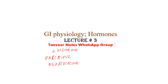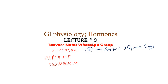Endocrine hormones have four key features. First, they are released from an endocrine cell. From the endocrine cell, these secretions move via portal circulation to the systemic circulation, and from the systemic circulation to the target cells. So there is a long distance they must cover.